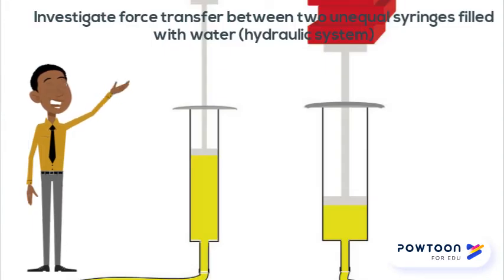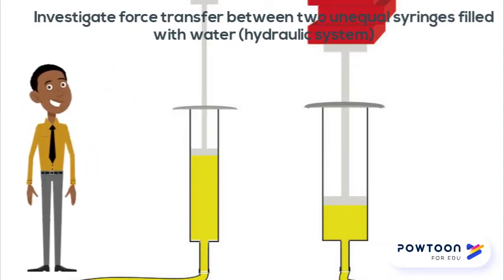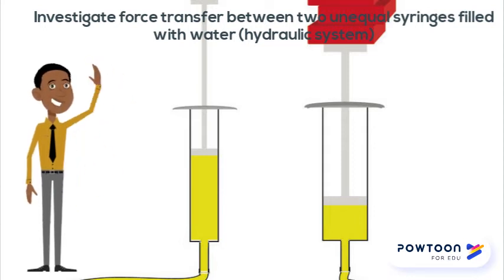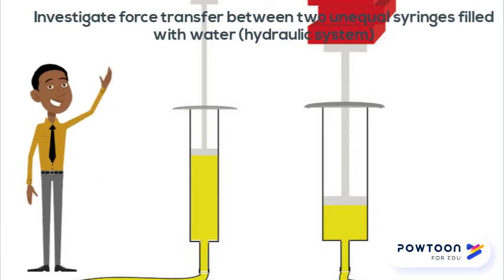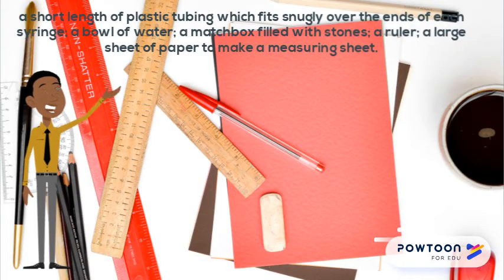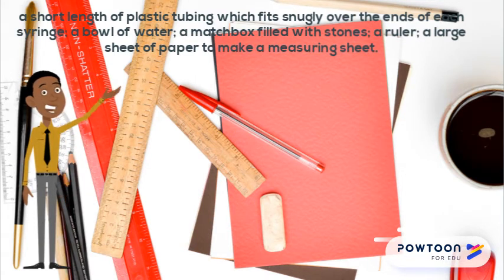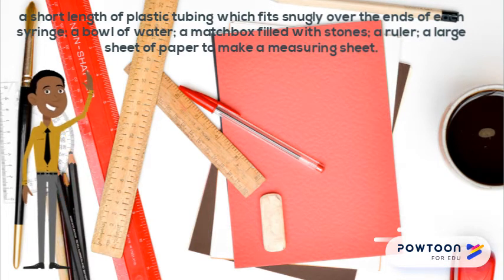Let's do an investigation on the force transfer between two unequal syringes filled with water in a hydraulic system. We start by making a hydraulic system. You will need three plastic syringes without needles — two of equal volume and one smaller one — a short length of plastic tubing which fits snugly over the ends of each syringe, a bowl of water, a matchbox filled with stones, a ruler, and a large sheet of paper to make a measuring sheet.